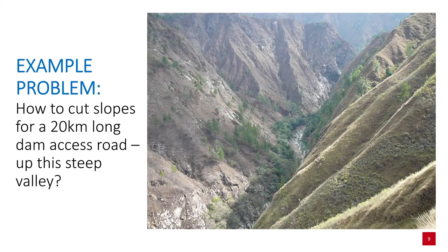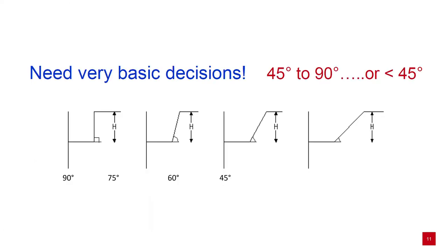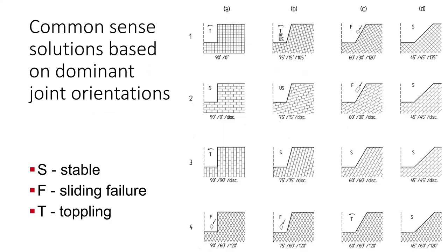Here's an example problem: how to cut slopes for a 20km long dam access in a steep valley. We can do some basic sketches for the dam site, but the client in this case actually wanted to minimize rock slope reinforcement and avoid tunnels — effectively wanting to remove a mountain in some cases to achieve stable slopes. We often need to make some very basic decisions: will the slope angle range from 45 to 90 degrees, or will it be shallower than 45 degrees? We can make common-sense based solutions based on dominant joint or discontinuity orientations, where there are more than five stable options — we design the slope to suit the structure.